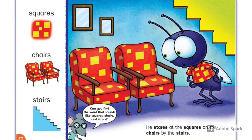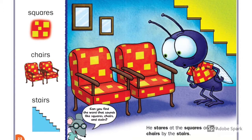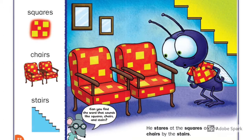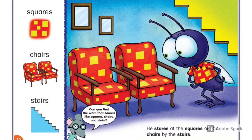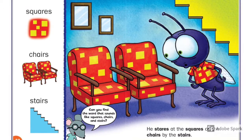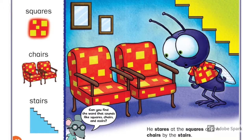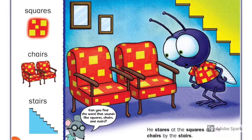Squares, chairs, stairs. He stares at the squares on the chairs by the stairs. Who is he? Is he upstairs or downstairs? He is looking at the chairs — how many chairs are there?